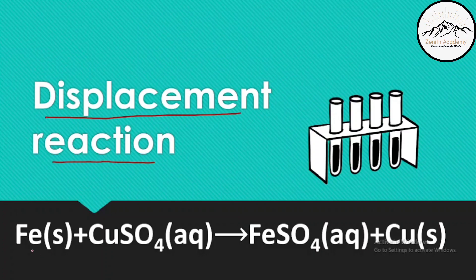Which reaction are we going to study? Iron plus copper sulfate gives iron sulfate plus copper. So let's see what happens when iron reacts with copper sulfate solution. Iron is in solid form and copper sulfate is in aqueous form.